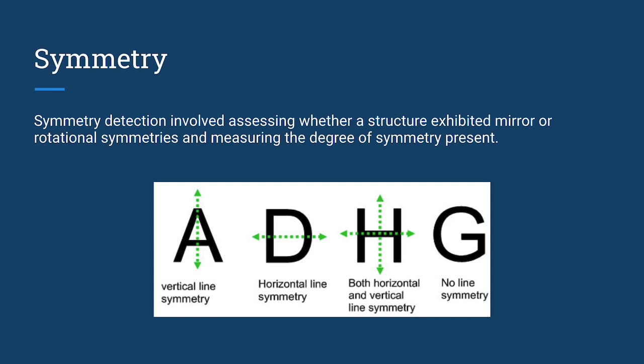The symmetry code assessed whether a structure exhibited horizontal or vertical symmetries and measured the degree of symmetry present.